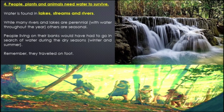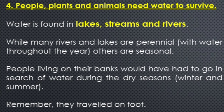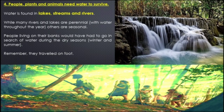Now let's come to the fourth point. People, plants, and animals all need water to survive — we cannot survive without water. So in search of water bodies, early humans used to move from one place to another. Water is found in lakes, streams, and rivers. While many rivers and lakes are perennial — meaning they have water throughout the year — some water bodies become dry during dry seasons, winter, and summer. So people living on their banks had to go in search of water during dry seasons.